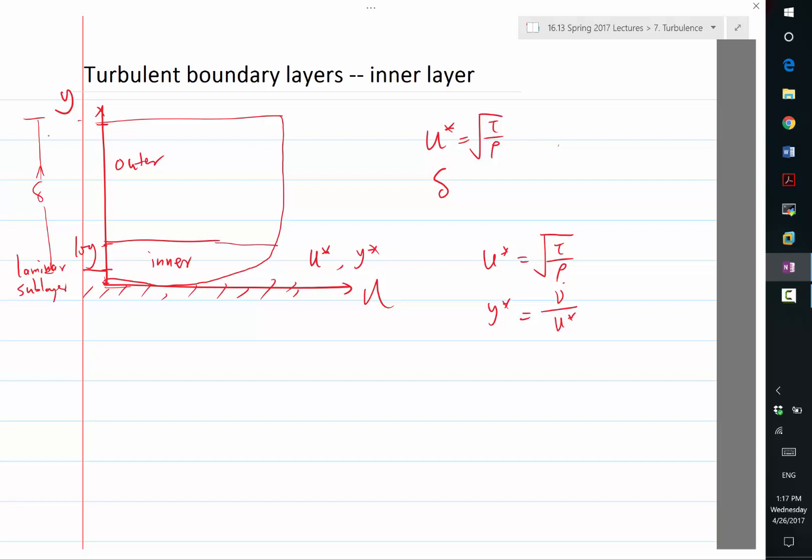For finite Reynolds numbers, as the Reynolds number decreases, the inner layer occupies a larger portion of the boundary layer. At some point, the assumption becomes progressively worse.